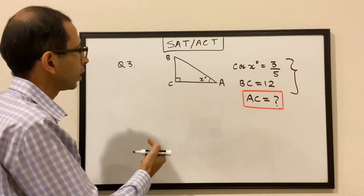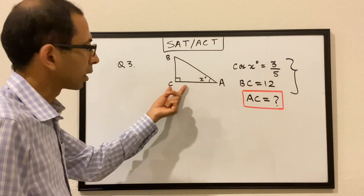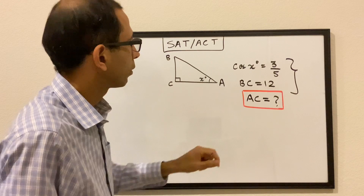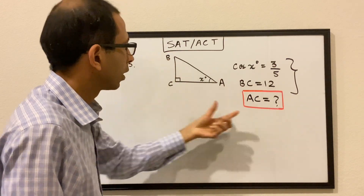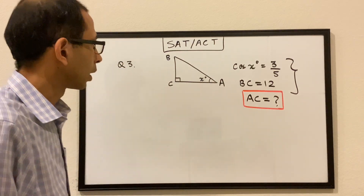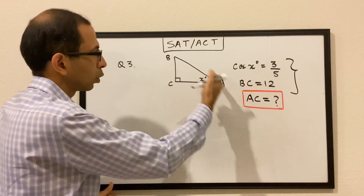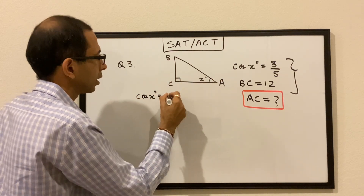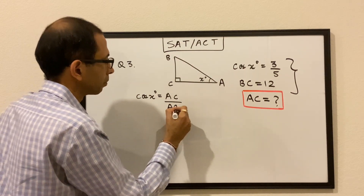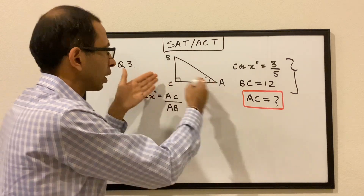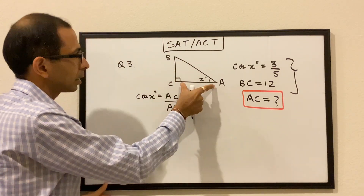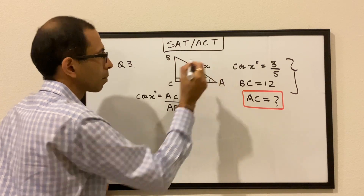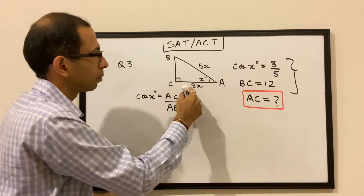Next question: we have a right triangle ABC with angle C = 90° and angle A = x degrees. Cos of x is given as 3 over 5, the length of BC is 12, and we have to find the length of AC. Cos of any angle is adjacent over hypotenuse, so cos of x = AC over AB. Since we don't know the actual lengths, just the ratio, let's say AC = 3k and AB = 5k, so the ratio 3k over 5k = 3 over 5.